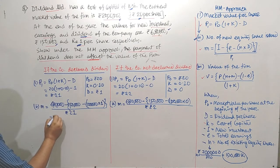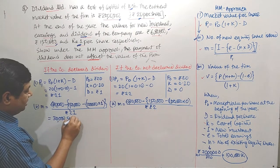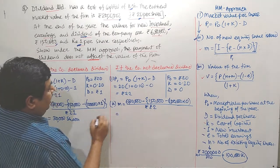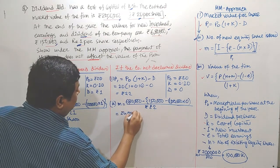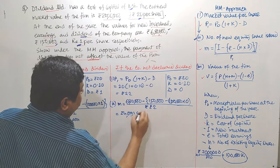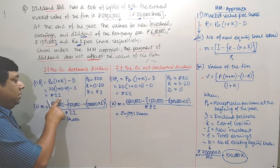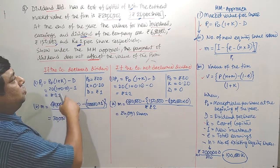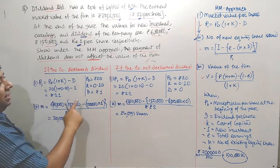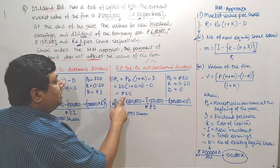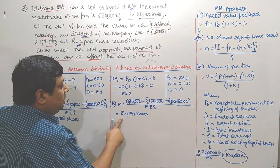Solving the equation for case 1 (dividend declared), we get M = 30,000 shares. For case 2 (no dividend declared), M = 24,091 shares. So if the company declares dividend, it needs to issue 30,000 new equity shares; without dividend, it needs to issue only 24,091 shares — this difference is due to the impact of the different P1 values of Rs. 21 and Rs. 22.